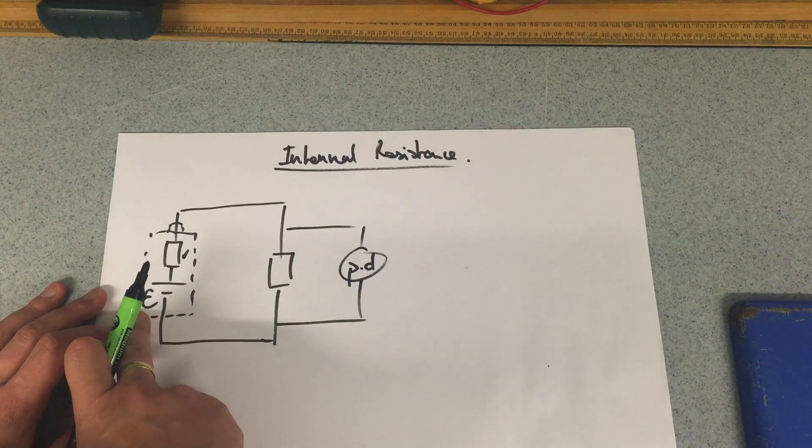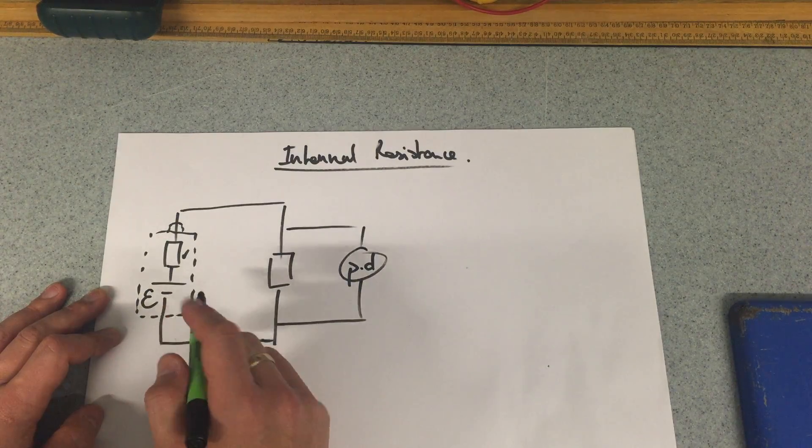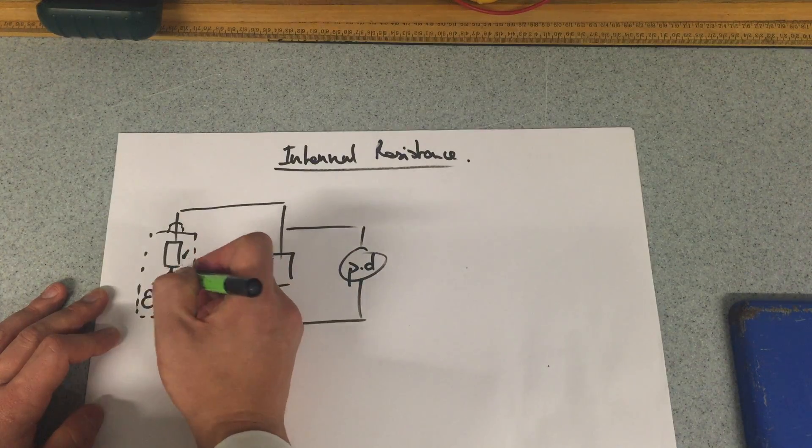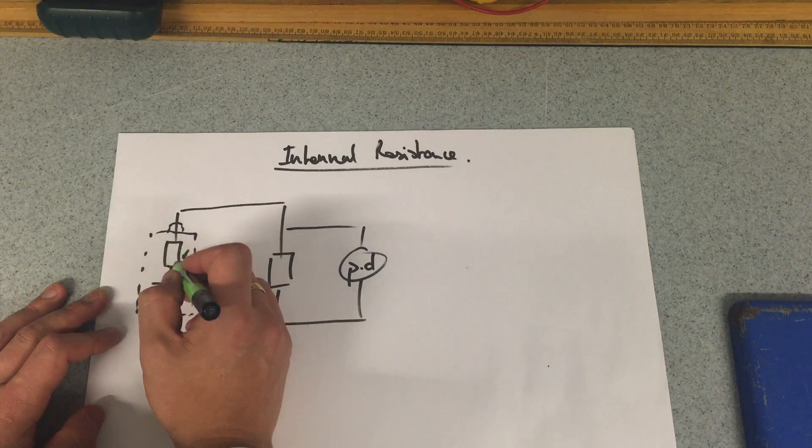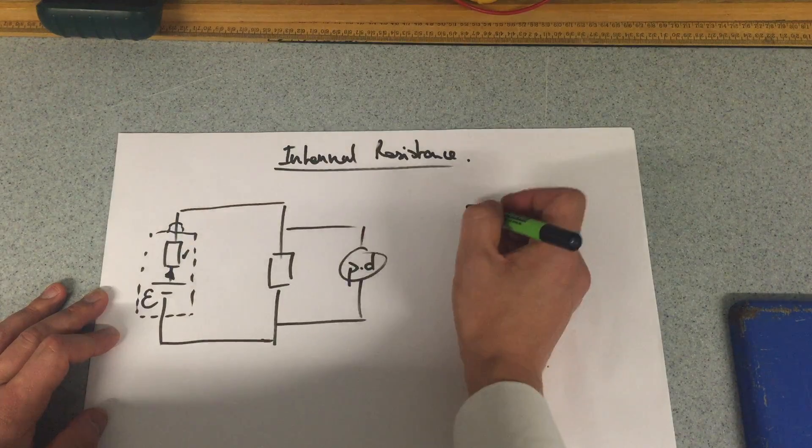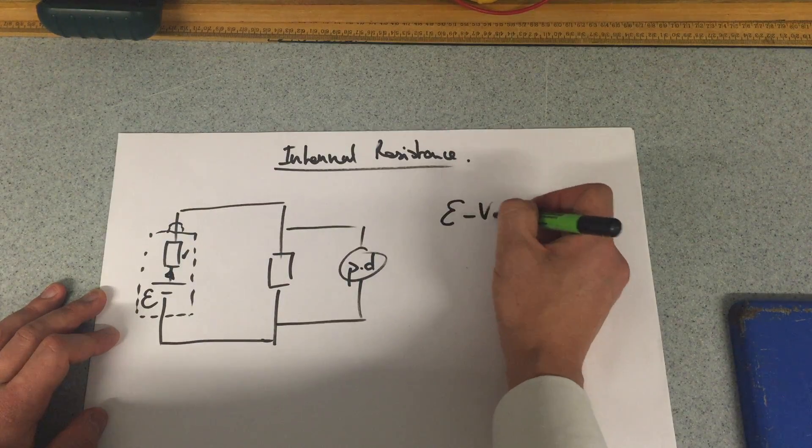we know that the PD is going to be different from the EMF because a current's being driven which causes a potential difference in this internal resistance, i.e. volts are lost. So the EMF minus the volts lost